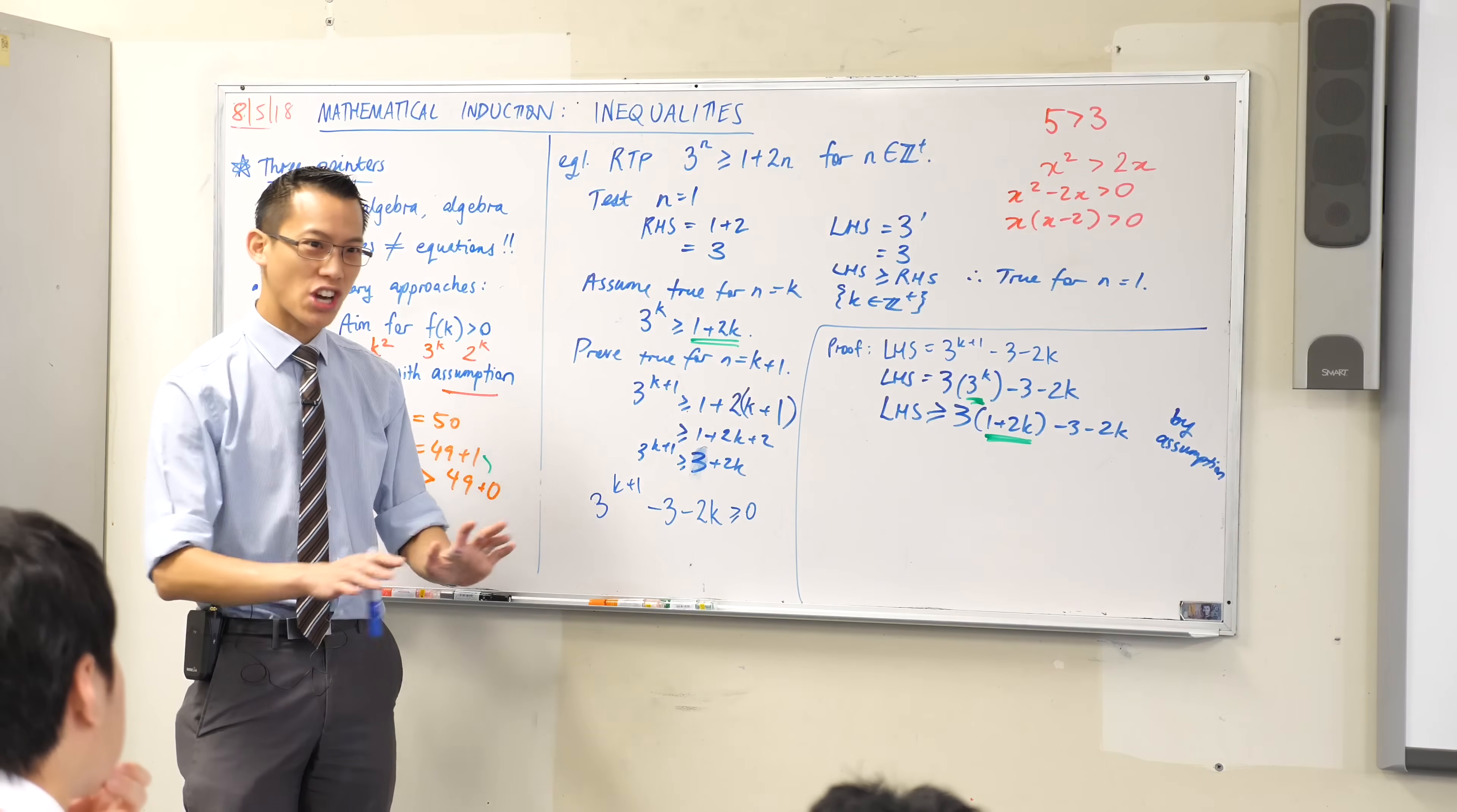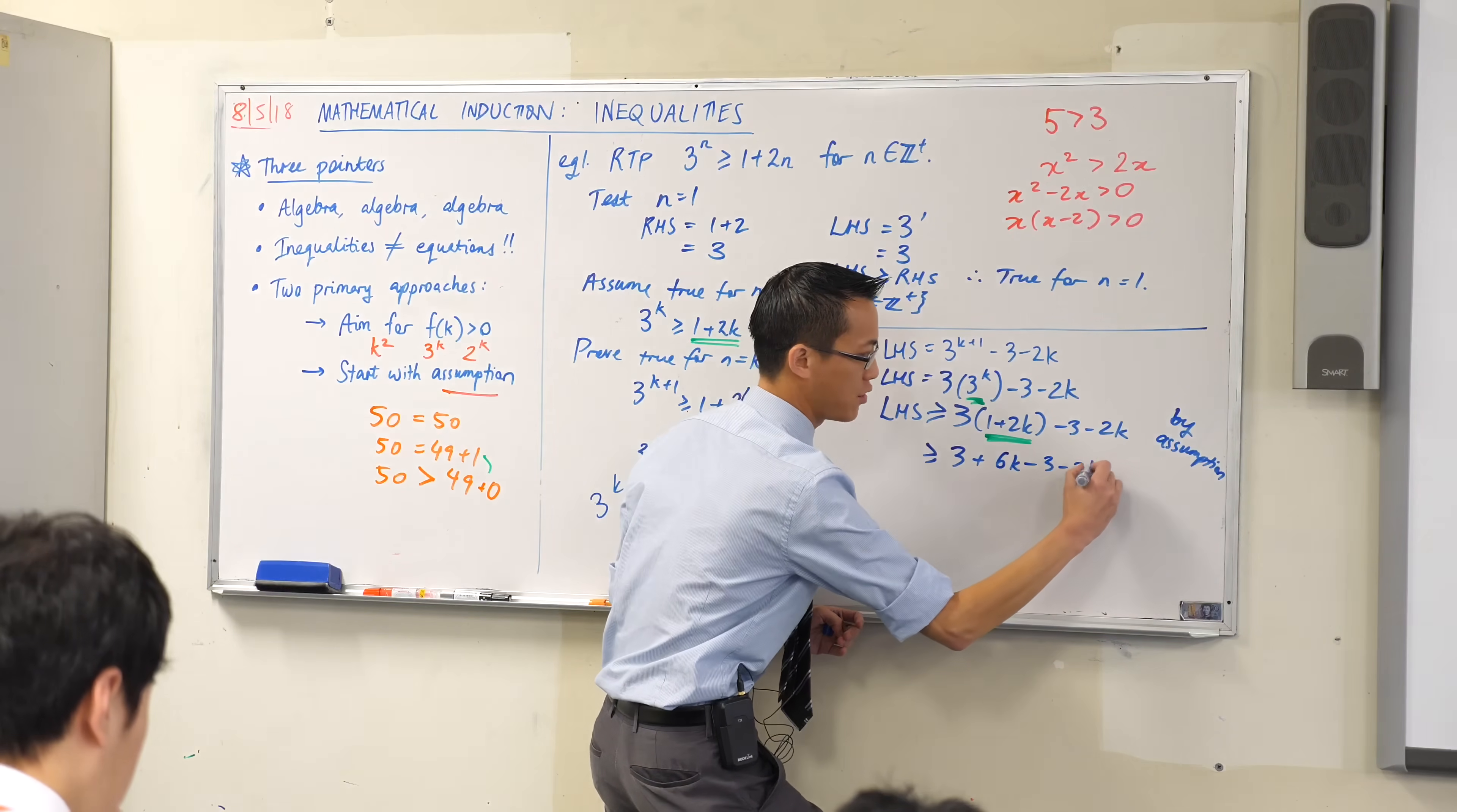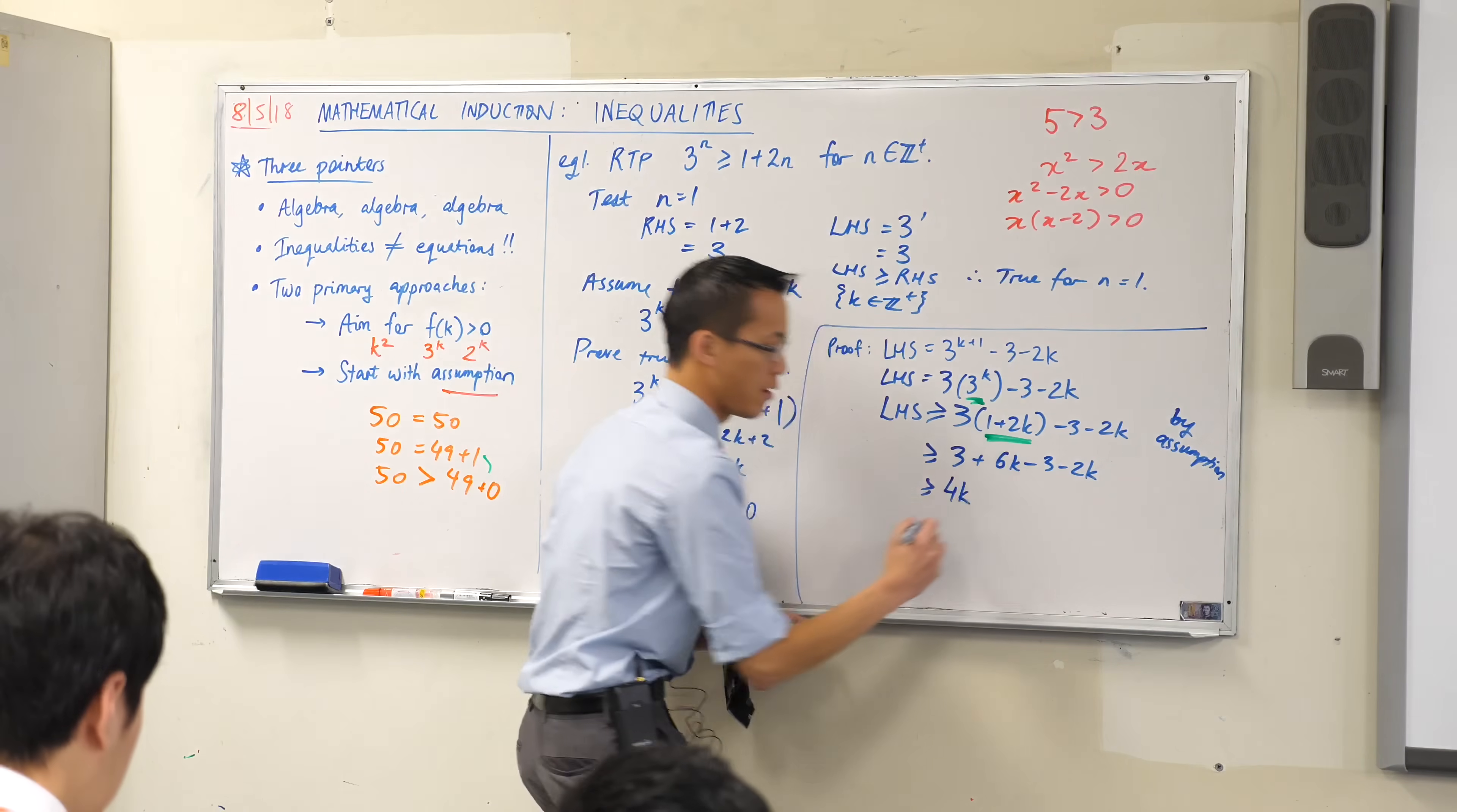From here, it pretty much kind of unfolds by itself. There's one more little trick up my sleeve, but let's just expand this. This is just algebra. What do I got here? I got 3 plus 6k minus 3 minus 2k. I can collect some like terms here. What constant terms left over? The constant term left is zero. What k, how many k's do I have? And the answer is four of them.